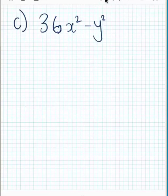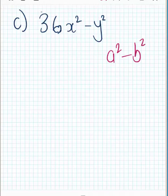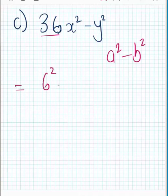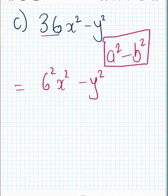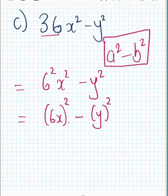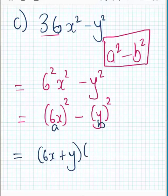For the next one, is it in the form of a squared minus b squared? Almost, but 36 is not being squared. I can't take 36 outside a bracket because there's no number in front of y squared. So I have to make 36 into a square — and 36 is a perfect square, so I can write it as 6 squared. I now have 6 squared times x squared minus y squared, which I can write as bracket 6x squared minus bracket y squared. Now it's clearly in this form: a squared minus b squared, where a is 6x and b is y. So the answer is 6x plus y times 6x minus y.